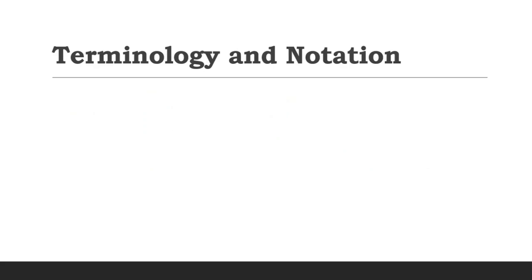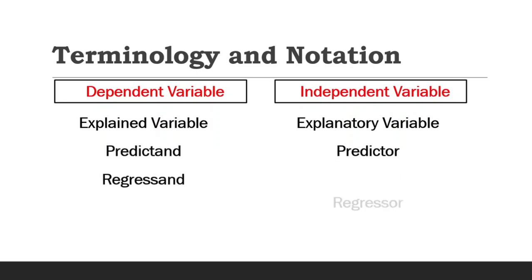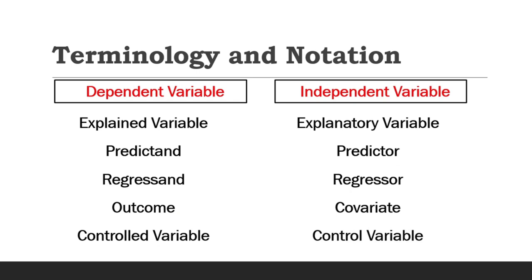In terms of terminology and notation, we are most familiar with what we call the dependent variable and independent variable. Now, these variables can also be given different terminology, such as the dependent variable could be called explained variable, whereas the independent variable can also be called explanatory variable. So technically, we could have other terminology such as predictant and predictor, regressant and regressor, outcome and covariate, controlled variable and control variable for dependent variable and independent variable, respectively.